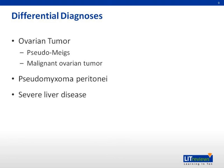Any form of severe liver disease, such as hepatocellular carcinoma, can cause hypoalbuminemia leading to ascites and pleural effusion. Thyrotoxicosis can sometimes present with chylous ascites, where patients have ascitic fluid with high triglyceride content and pleural effusion secondary to cardiac failure.